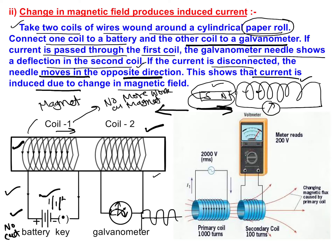This is the same thing as done practically in industrial cases. Here we have a primary coil and a secondary coil — this is also known as mutual induction.